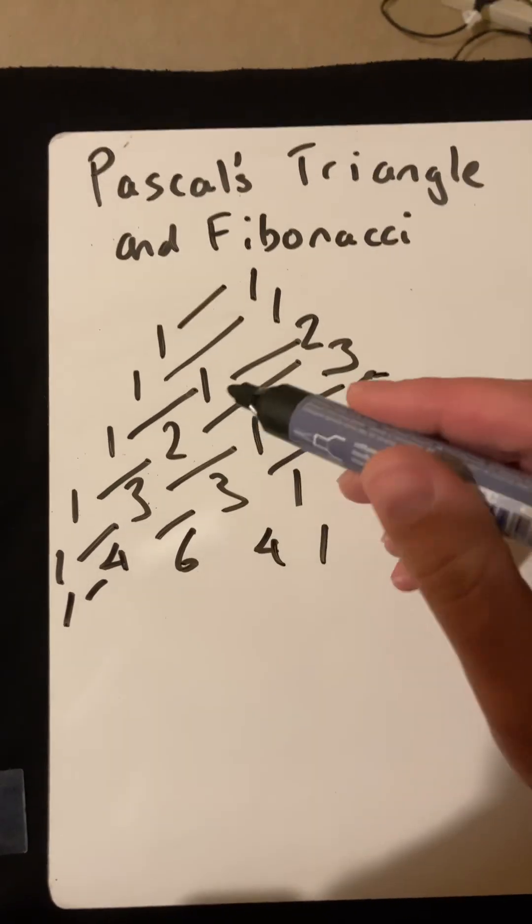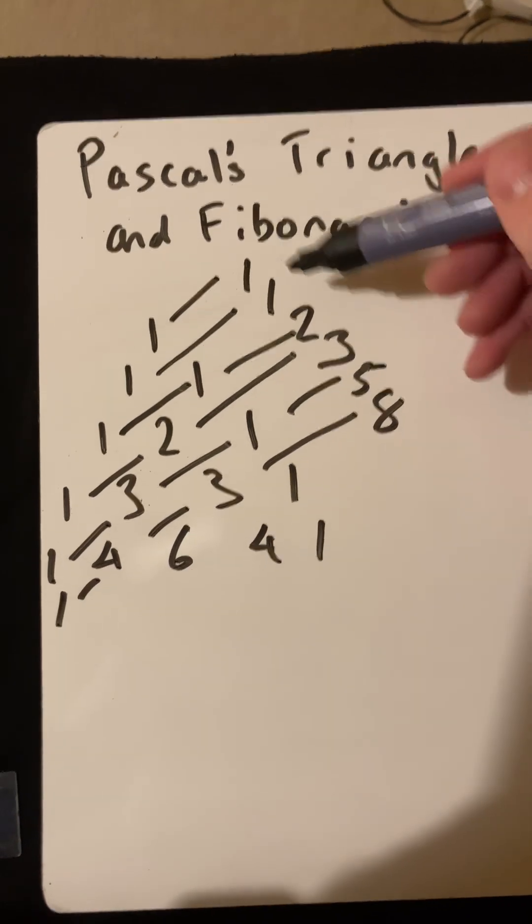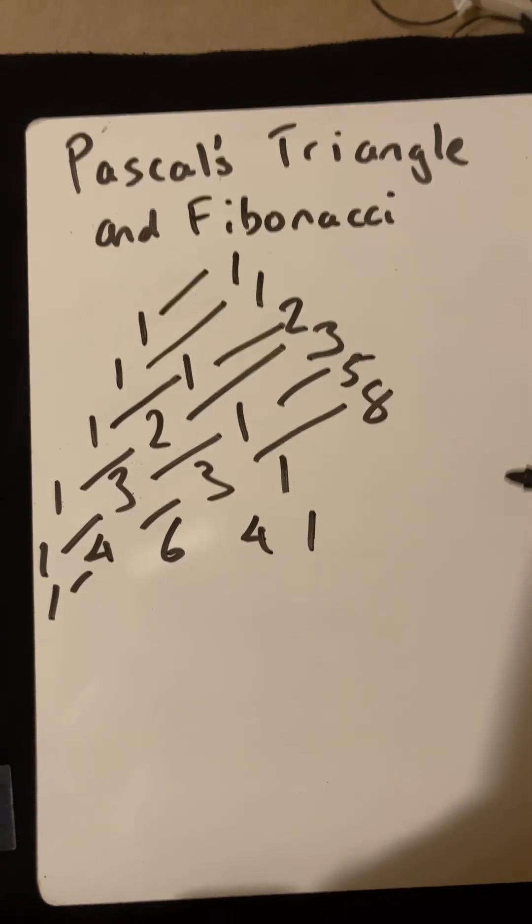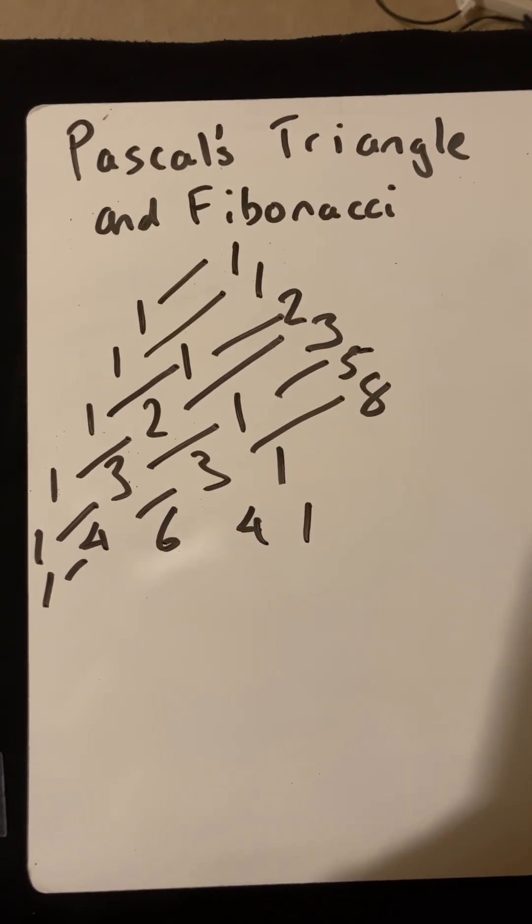So it's very useful in things like the binomial sequence and other patterns, but it also leads to the Fibonacci sequence. So there we go, that's Pascal's Triangle and Fibonacci numbers. Thanks.